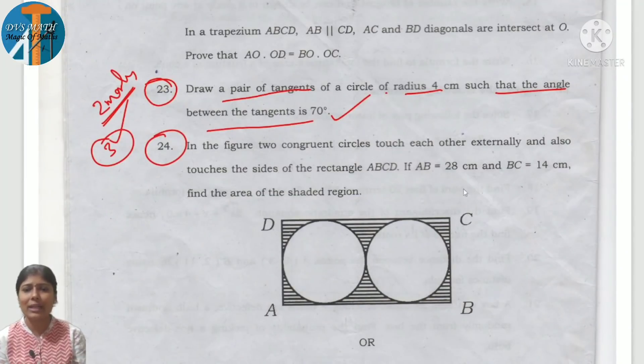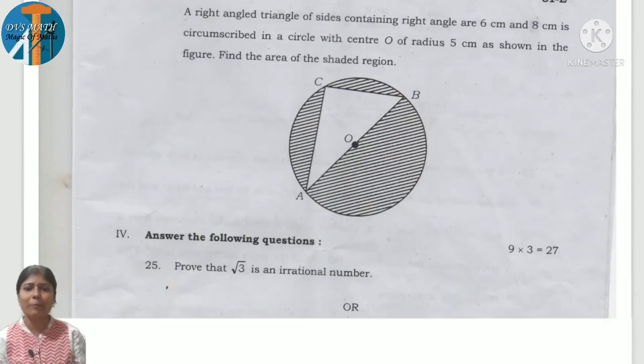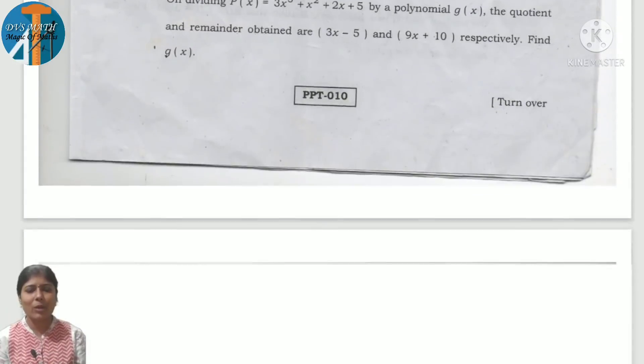Area of shaded region. This side BC is 14, the diameter will be 14. The radius is here, it's a right angle triangle. So area of circle minus area of triangle.